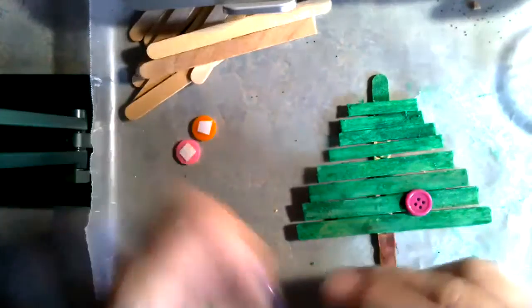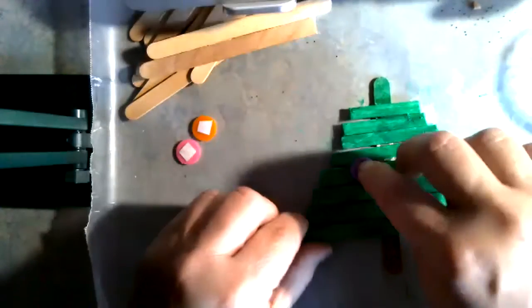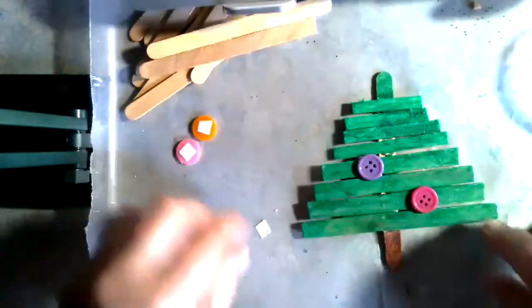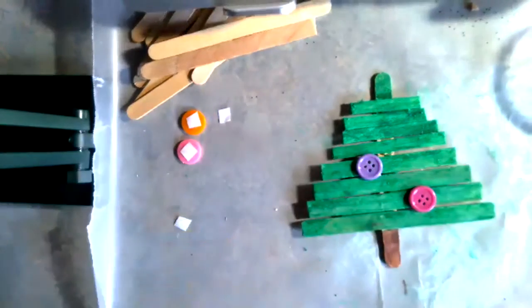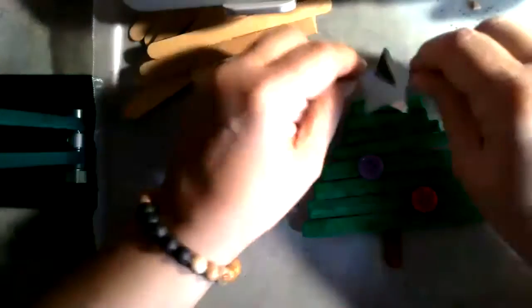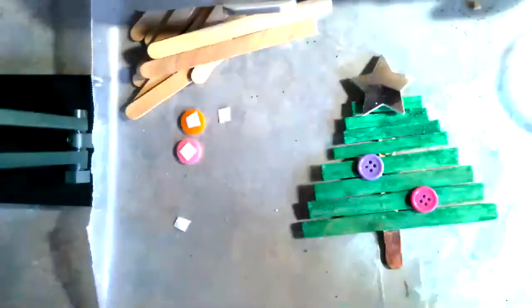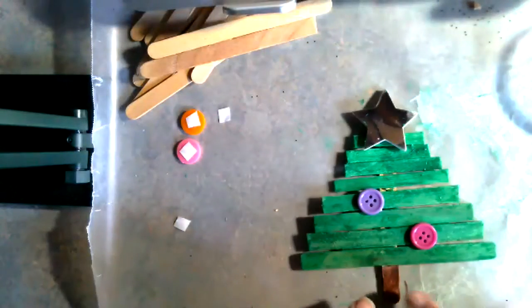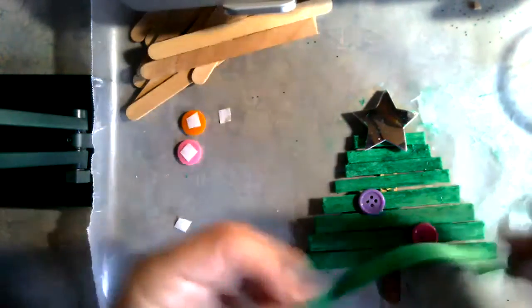You're just going to stick them on to decorate. Hi Raven! Raven decided to come in and say hello. Then you're going to take your star and put that on the top of your tree. There you go. There should be a piece of ribbon in there you can glue to the back to make a hanger.